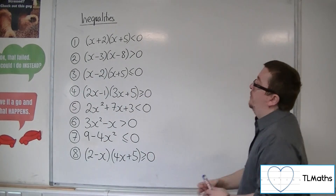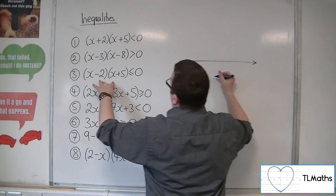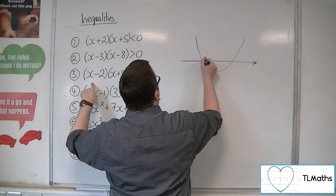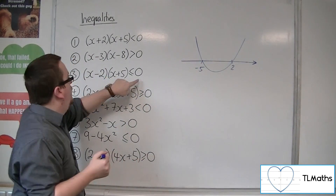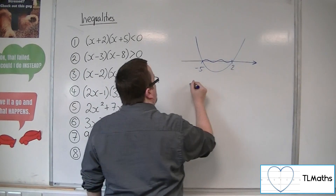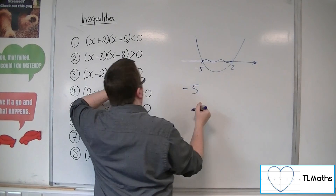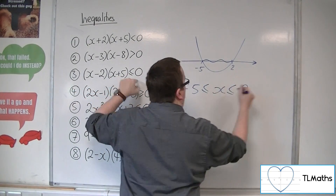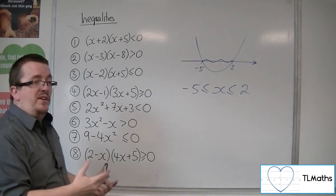Number 3: (x−2)(x+5) ≤ 0. This is a parabola crossing at −5 and 2. Where is it below the x-axis? It's below it there. And because we've got the equality sign on the inequality, the equality sign must be included here as well. So: −5 ≤ x ≤ 2.